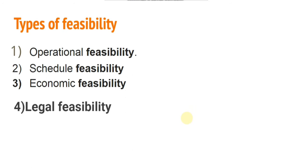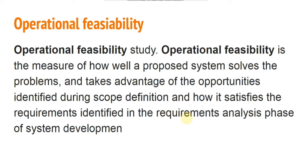The types of feasibility are: operational feasibility, schedule feasibility, economic feasibility, and legal feasibility. Operational feasibility is the study of how the proposed system solves the problem. It covers the operational aspects of the system, the tasks, advantages, and opportunities identified during scope definition, and how well it satisfies requirements identified in the requirement analysis — including how user requirements are captured.